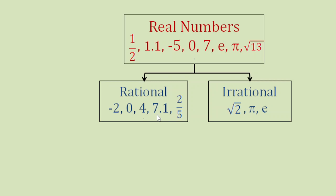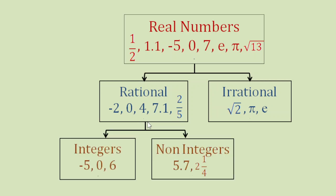Examples of rational numbers: negative 2, 0, 4, a decimal number, and a fraction. These rational numbers can be classified into two: integers and non-integers. So we can say that integers and non-integers are subsets of rational numbers. Examples of non-integers are a decimal number and a fraction.